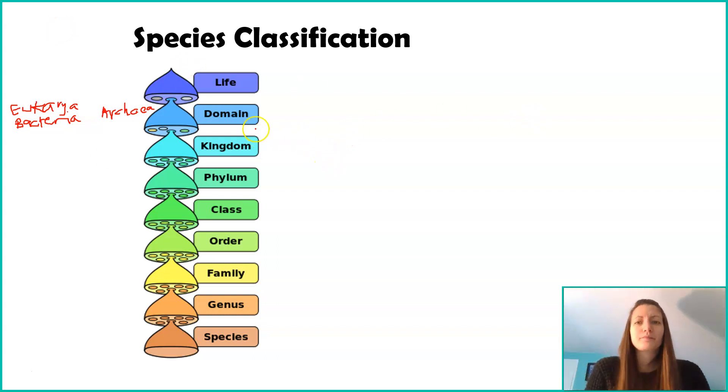So, underneath domain, each domain has different kingdoms. Within each kingdom, there's multiple phyla. Phyla is the multiple of phylum. In the phyla, we have classes. In classes, we have orders. In orders, we have families. In families, we have genuses. And within genus, we have species.